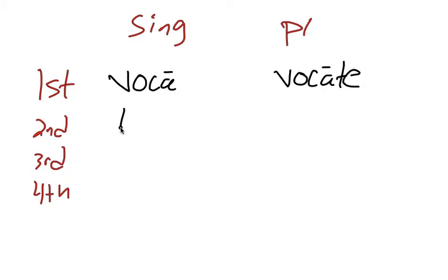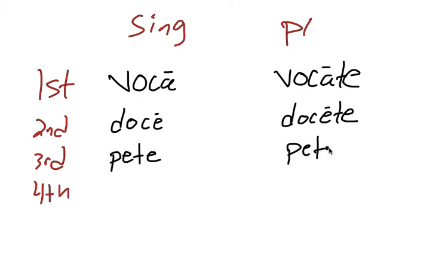And then for second conjugation, say doce and docete, those would both mean teach. And for third conjugation, we'll use peto, so pete and petite, those would both be seek. And then for fourth conjugation, audi and audite, those would both mean hear.